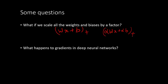This creates a problem when we try to normalize inputs or standardize weights and biases. This leads to the idea of putting an L2 norm penalty on W, which helps with regularization of the neural network.